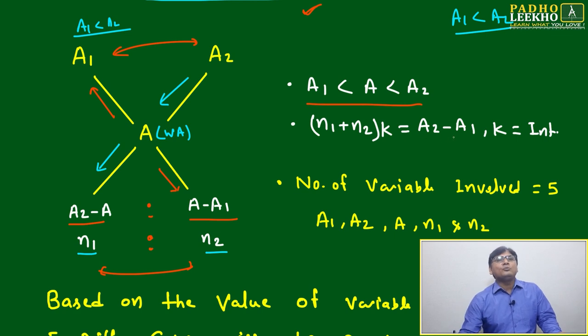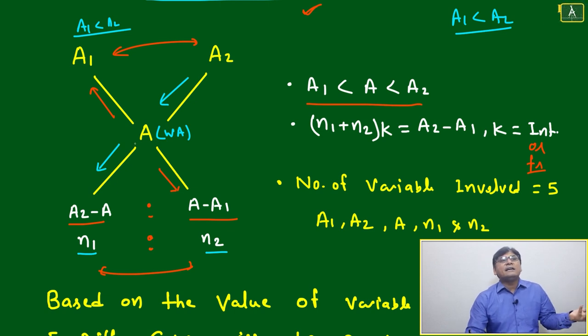Then if you are multiplying with k equal to A2 minus A1, k will be integer or fraction, both can be, not only integer. In few cases, A2 minus A1 will be less than n1 plus n2, and in few cases n1 plus n2 will be more than this one, depending on the factor of multiplication.